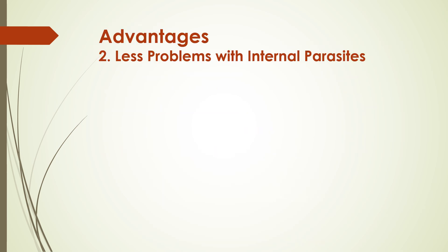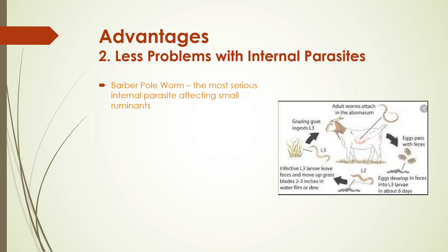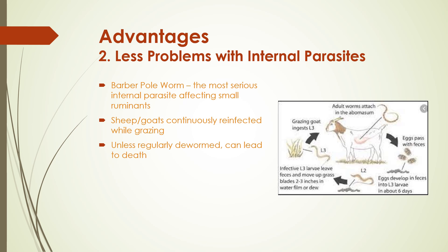The second advantage is fewer problems with internal parasites. Of all the internal parasites, the barber pole worm causes the most problems in sheep and goats, who continuously reinfect themselves while grazing on pasture. Unless they are regularly dewormed, they will soon die. This regular deworming increases your costs, not only for the dewormers, but for the labor and time involved. And then there is the additional problem of the parasites developing resistance to the dewormers.